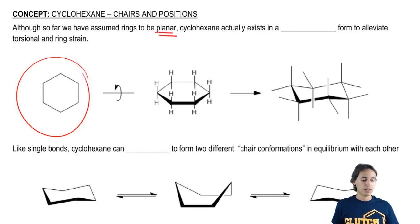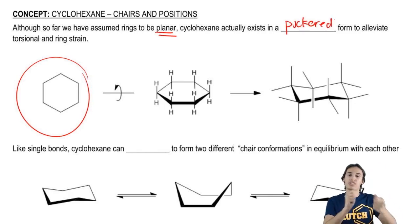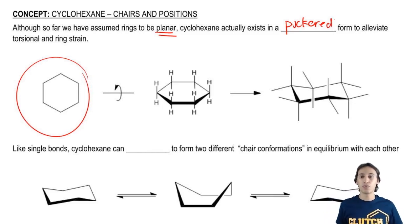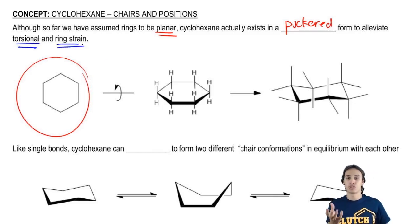But it turns out that cyclohexane actually exists in a puckered form, meaning that there are some angles in different directions, to alleviate both torsional and ring strain. Remember that torsional strain is the strain of having hydrogens eclipsing over each other.